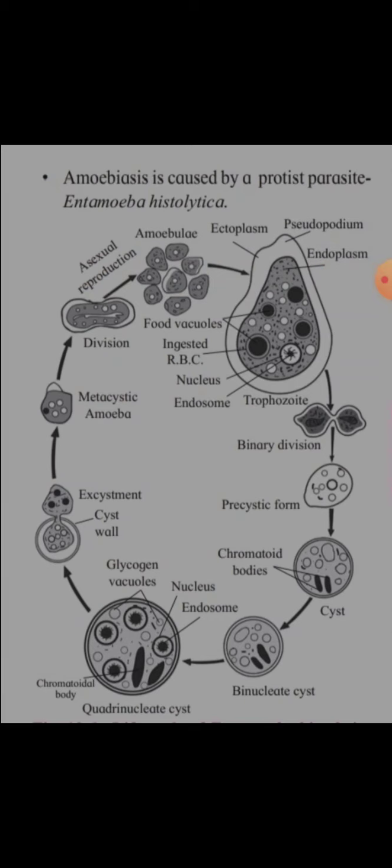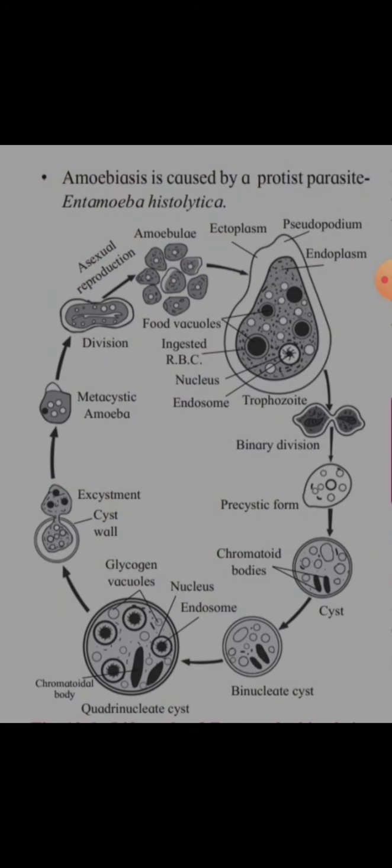Now we will see the life cycle. First, we will start with the metacystic amoeba. This metacystic amoeba will undergo asexual division and will form amoebuli — small organisms. From this, the trophozoite stage is obtained.